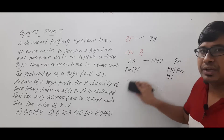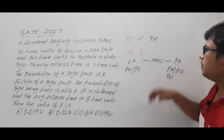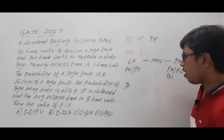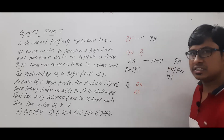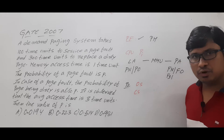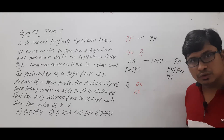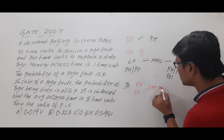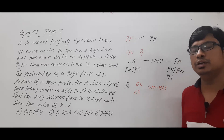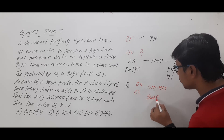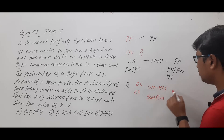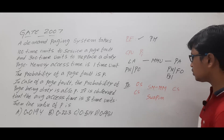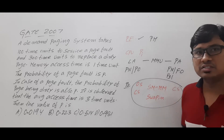Now let me discuss page fault service time. If page number 2 is not available in main memory but is available in secondary memory, the operating system takes control — there will be a context switch. Page number 2 is then transferred from secondary memory and loaded into main memory, a process called swap in. Then the OS gives control back to process PI — another context switch. So the total time: context switching, data transfer, and context switching, is called the page fault service time.